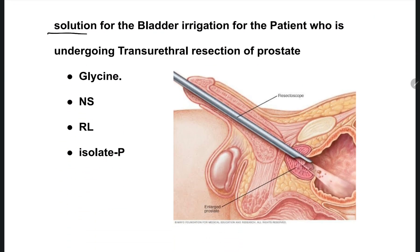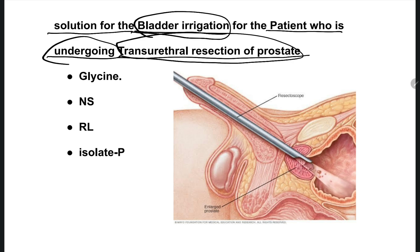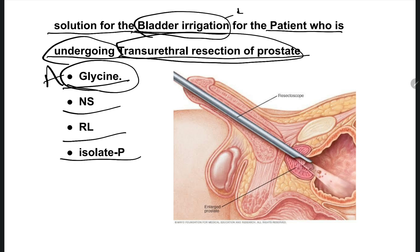The next question: the solution for bladder irrigation for a patient undergoing transurethral resection of the prostate. The patient is going to undergo TURP surgery. Which type of solution is used for bladder irrigation before surgery? The right one is option A, glycine. Before surgery, we irrigate the bladder with glycine. After surgery, we go for normal saline.